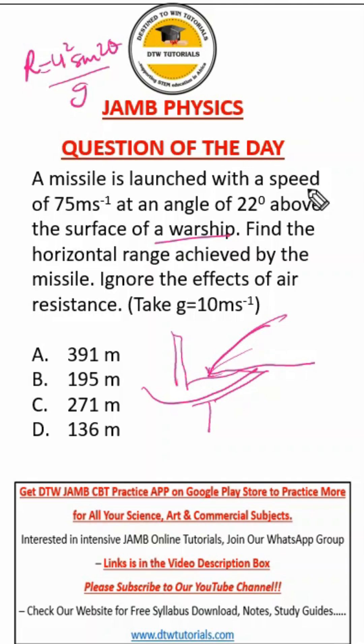This is the formula to find the range. u initial, that's our initial speed, is 75. The angle is 22 degrees and acceleration due to gravity on the missile is 10. So we're going to have it here.